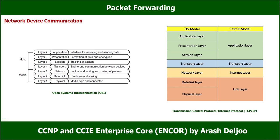In the OSI model we have seven layers, from layer one to layer seven. As you can see in the picture on the left: layer one is the physical layer, layer two is the data link layer, layer three is the network layer, layer four is the transport layer, layer five is the session layer, layer six is the presentation layer, and layer seven is the application layer.